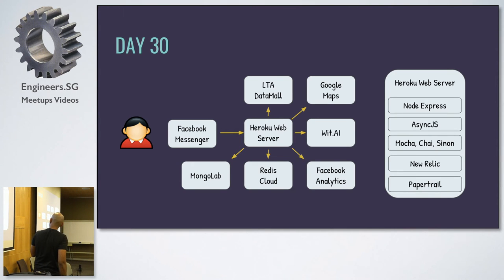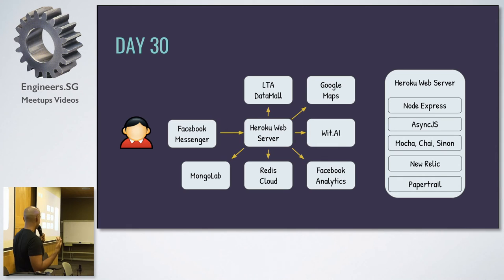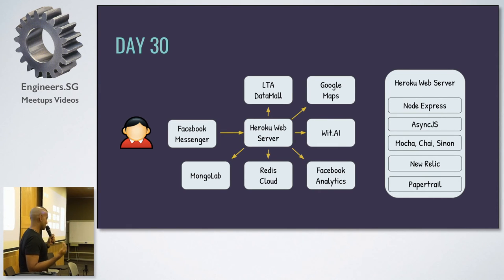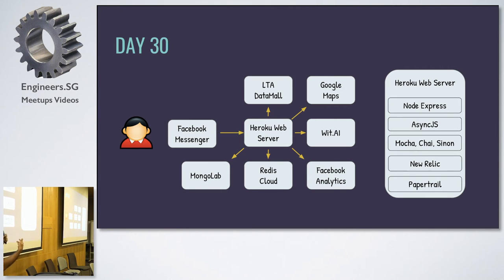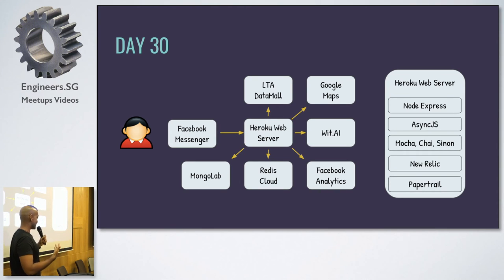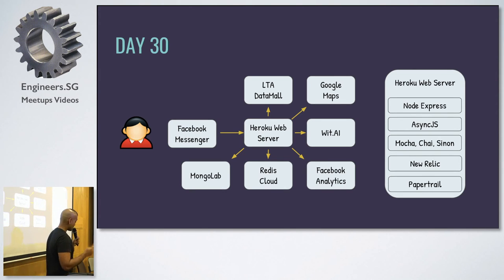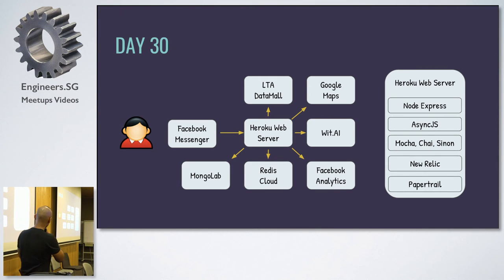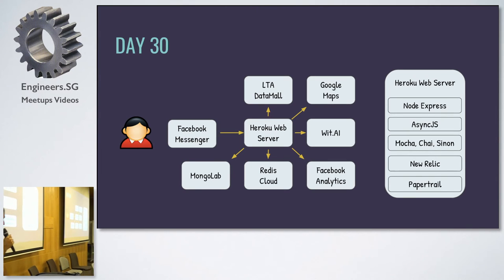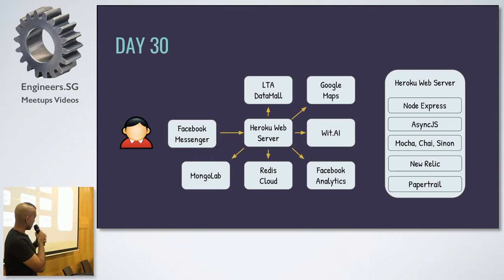Almost everything users spoke to Bus Uncle, almost every flow in Bus Uncle, I tracked. I had to know how many users were doing one thing versus something else, and how many were getting errors versus successfully completing their conversation. I added new features like Google Maps street view of bus stops. Because I was getting a lot more requests, I couldn't use JavaScript the way it normally works — I had to do a lot of load balancing and parallel processing. AsyncJS library really helped me. I also brought in a testing framework using Mocha, Chai, and Sinon, and did application performance tracking with Neuralic and PaperTrail.